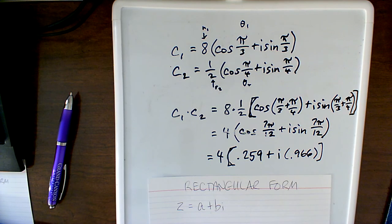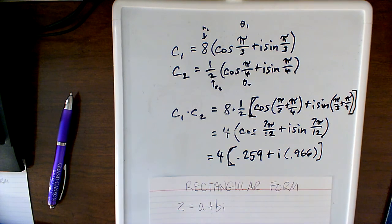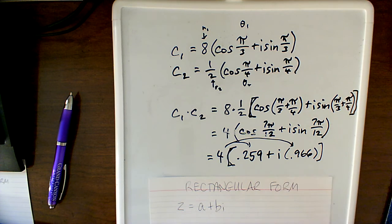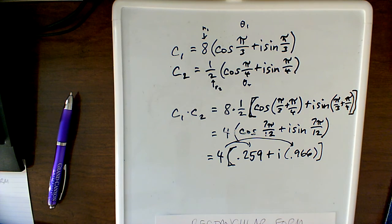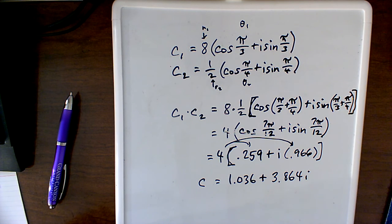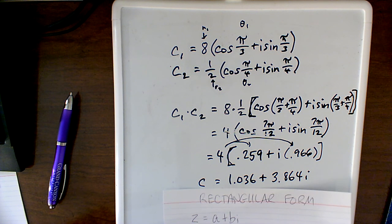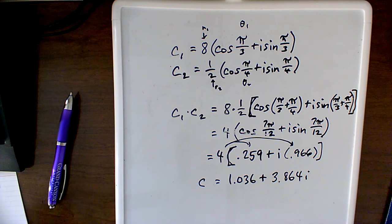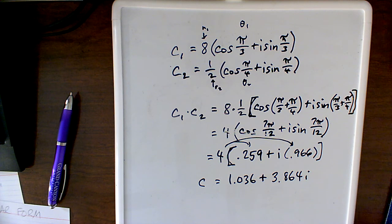Okay, so remember our goal now is to get to this a plus bi form. So really all we have to do now is multiply the distributive property, 4 times this, 4 times that. And so when I multiply that out, that's what I get, and that does match up with our a plus bi form. So this particular problem, that's how you would do it.